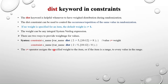The colon-equal operator (:=) assigns the specified weight to the item, or if the item is a range, to every value in the range equally. For example, if the range is 10 to 12 with weight 8, then 8 will be applied equally to 10, 11, and 12 — each gets a weight of 8.